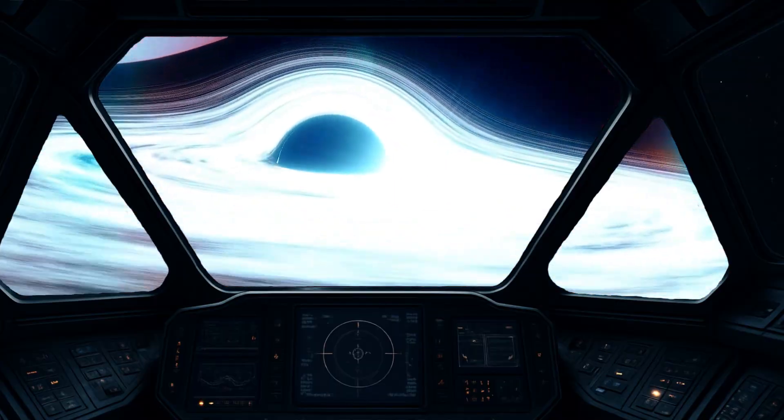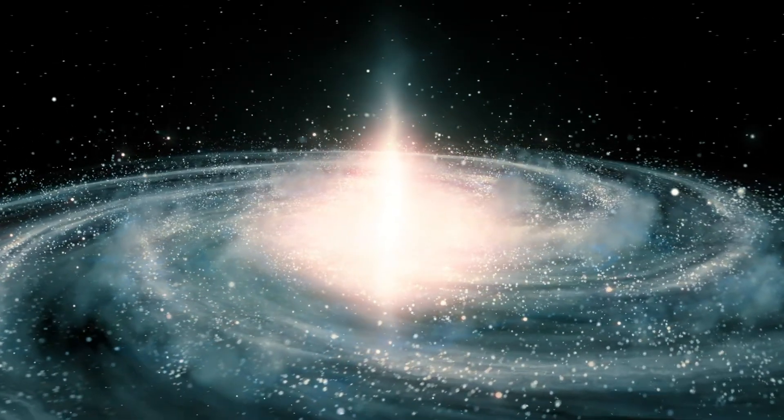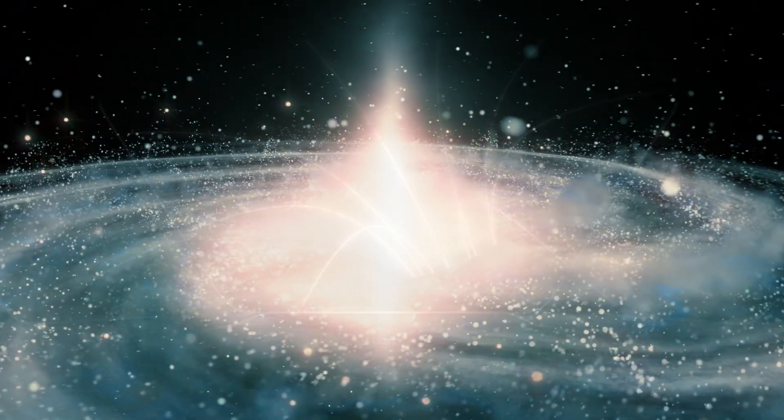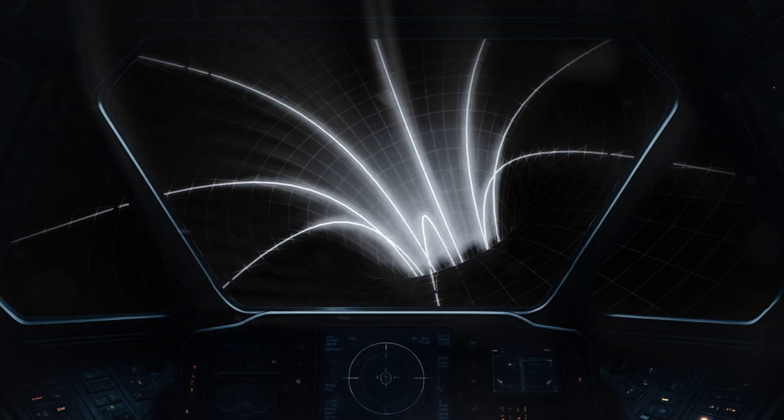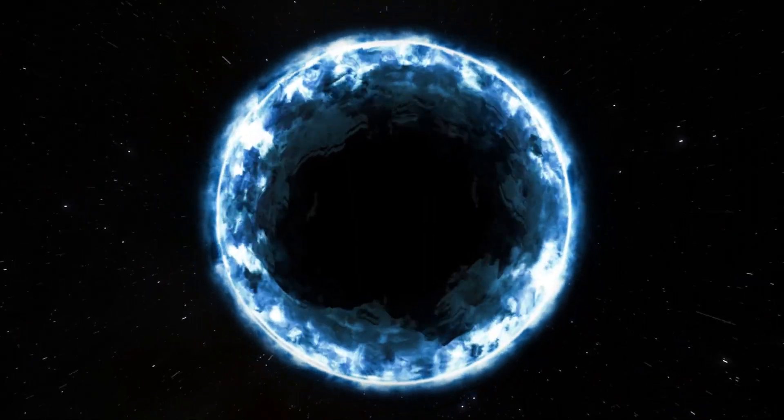Another theory is that when galaxies form, the mass flowing into their centers could naturally create wormhole-like structures as spacetime curves under extreme gravity. Simulations show that under certain conditions, wormholes may form without requiring massive amounts of exotic matter.